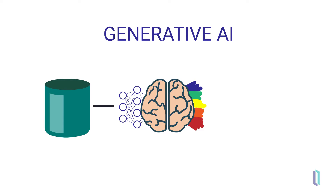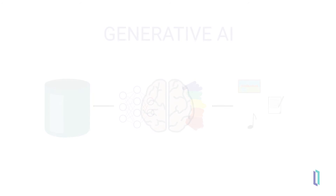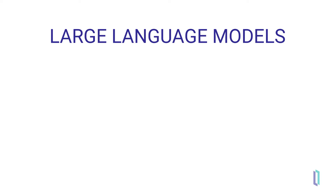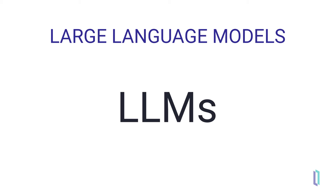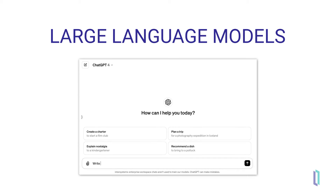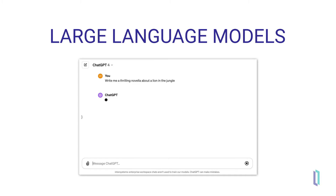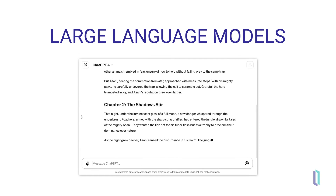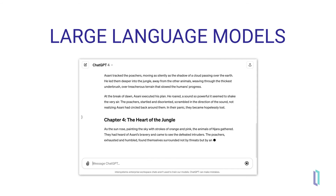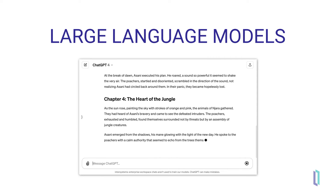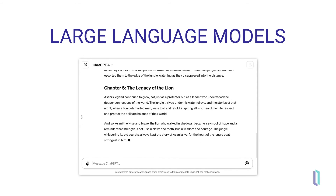It uses patterns learned from large amounts of data to produce new content that is becoming more and more indistinguishable from content created by humans. This capability is powered by what we call Large Language Models, or LLMs. Trained on massive datasets, these models adeptly process and produce text with human-like finesse, ushering us into a new world of potential use cases that we are only just beginning to explore.